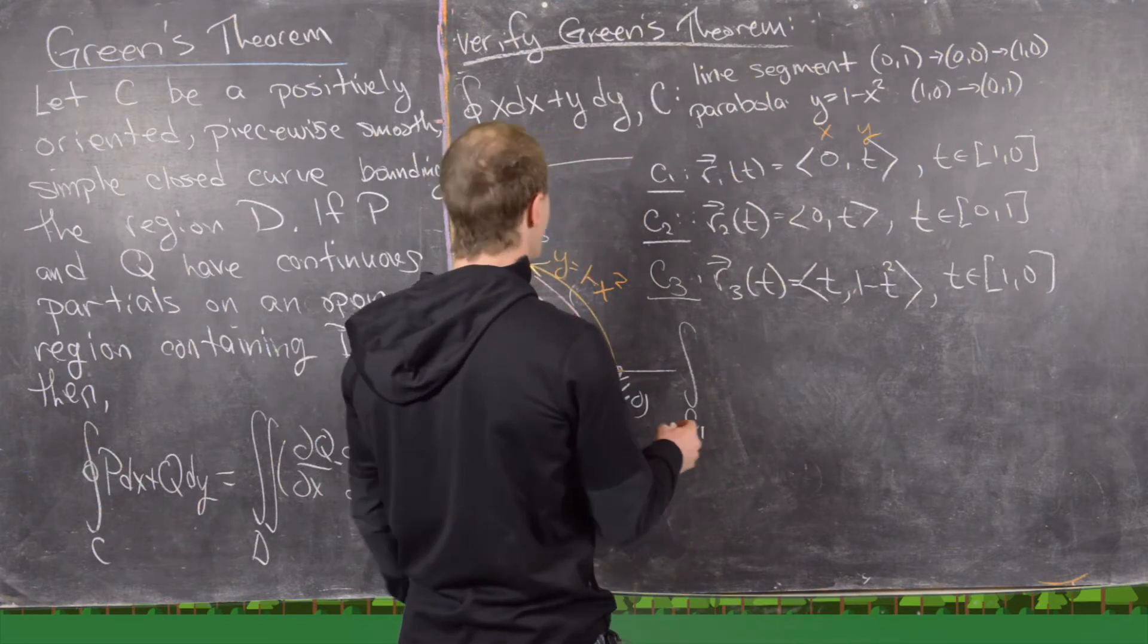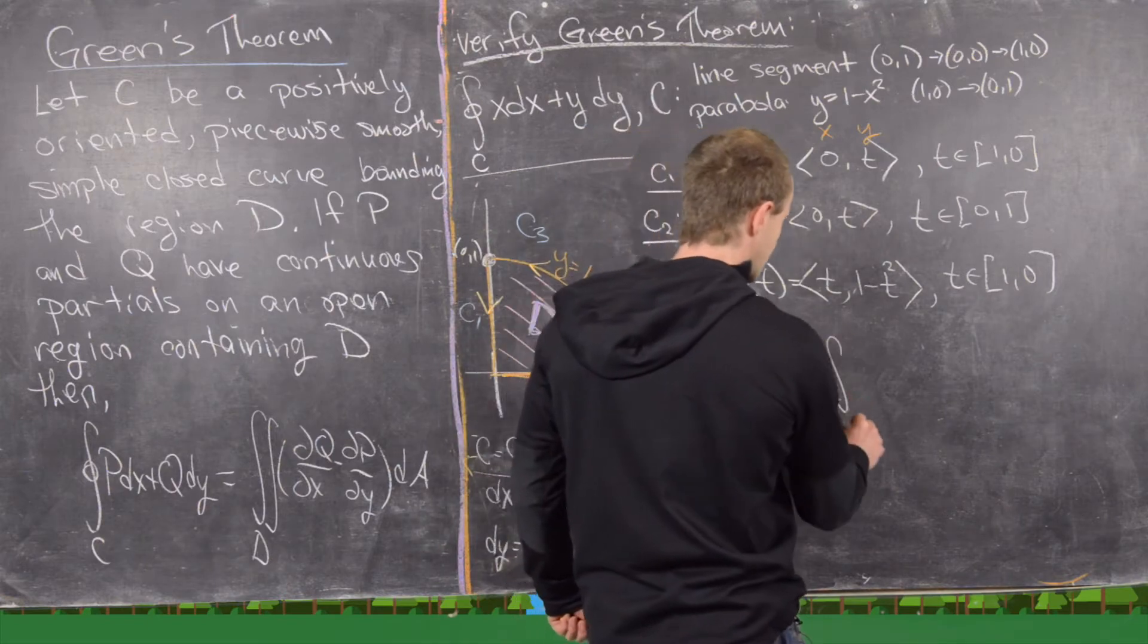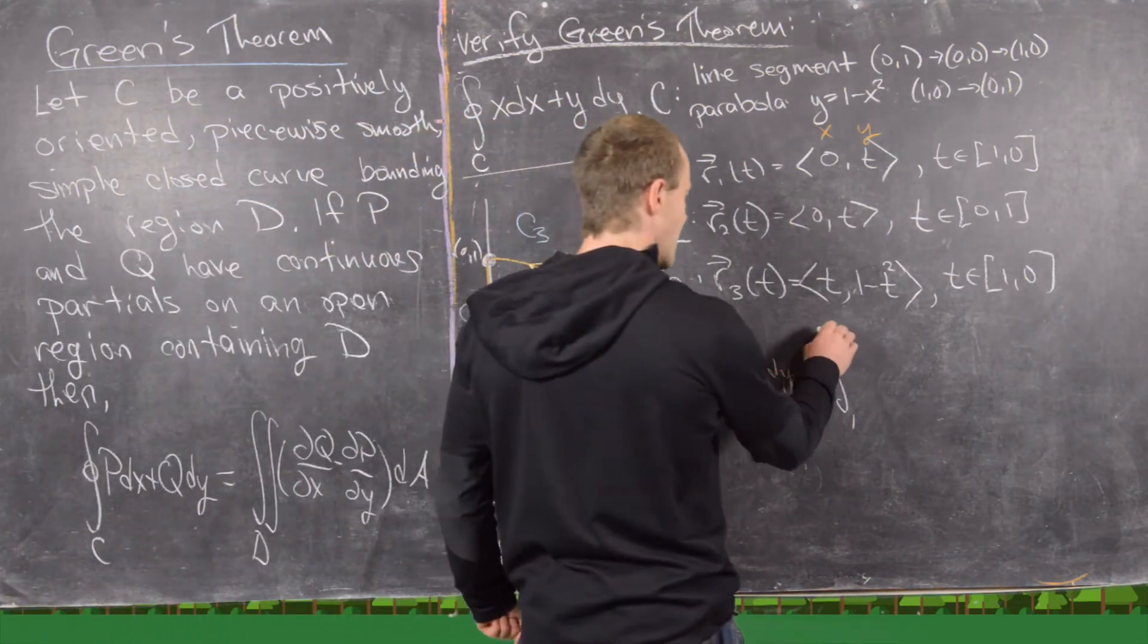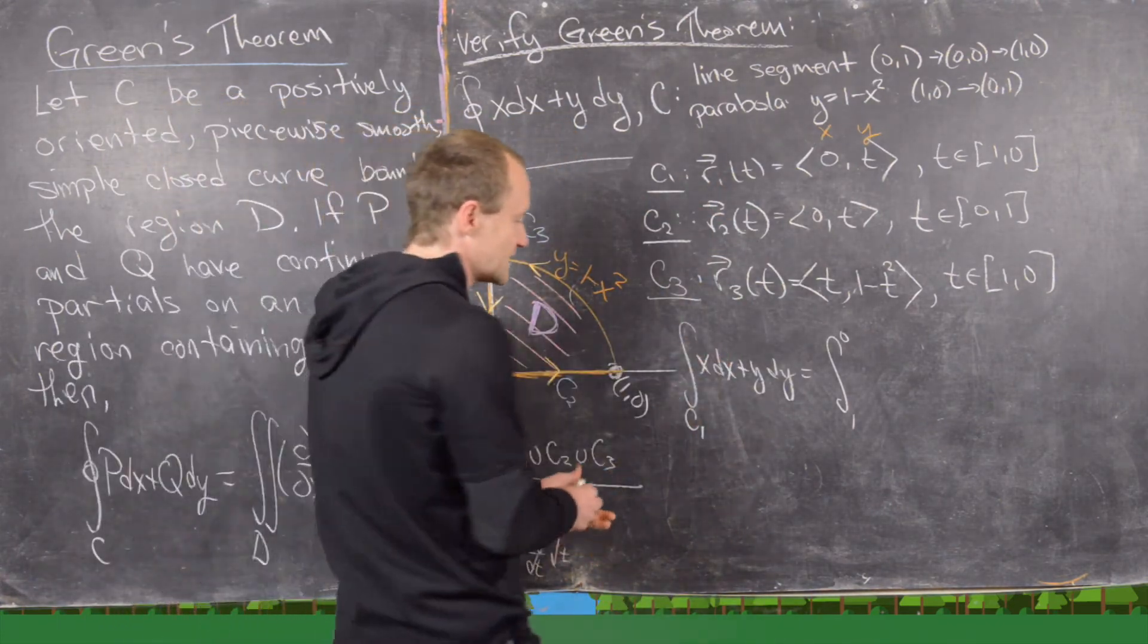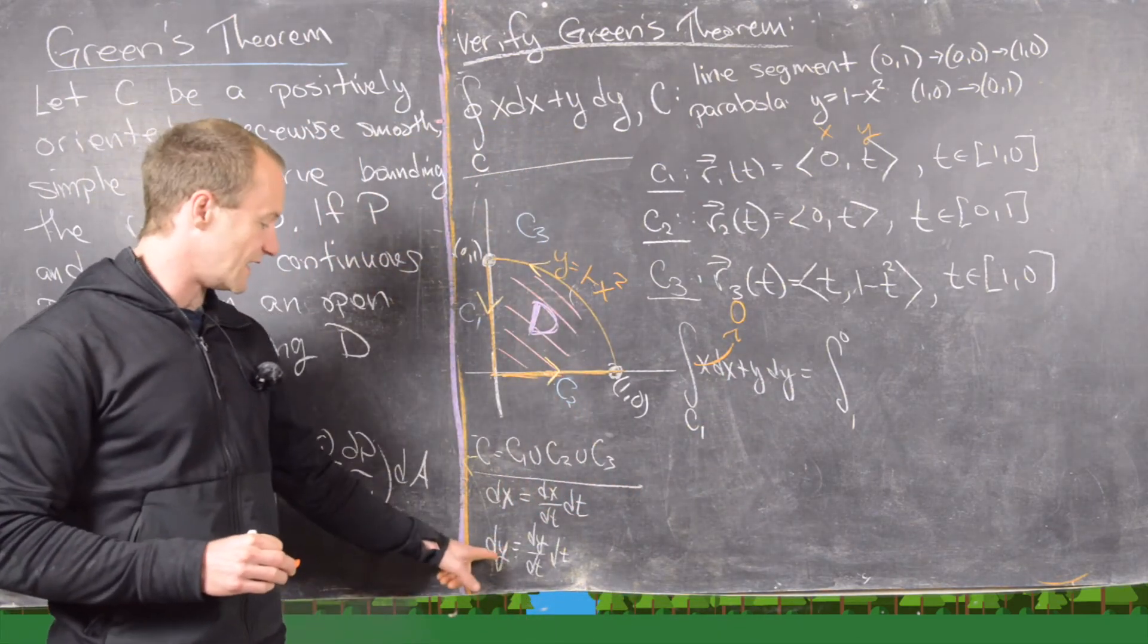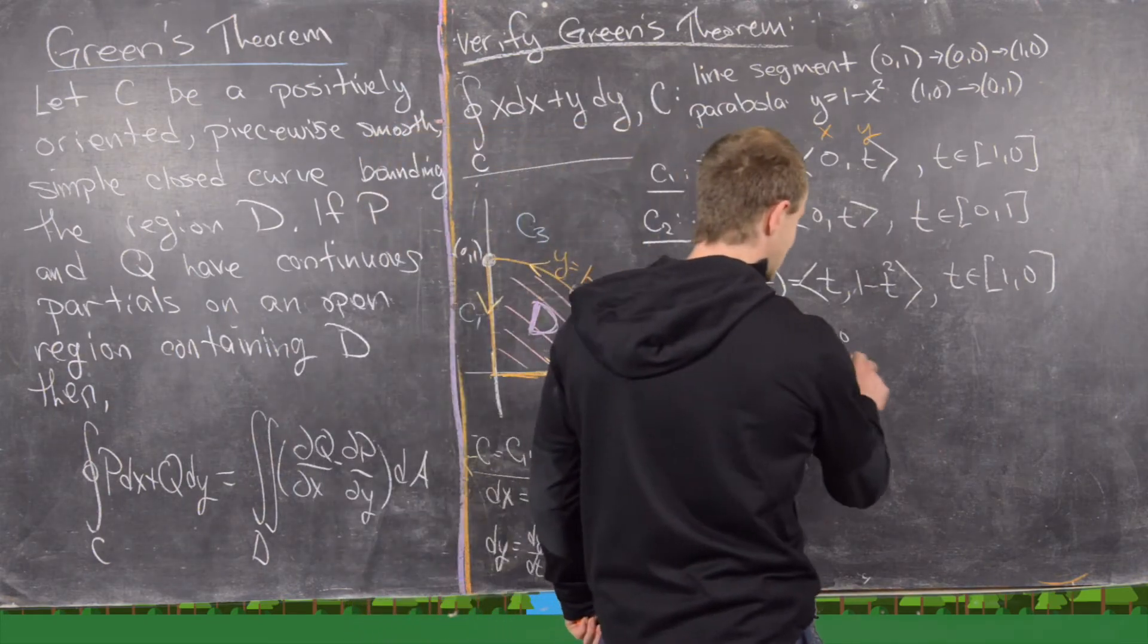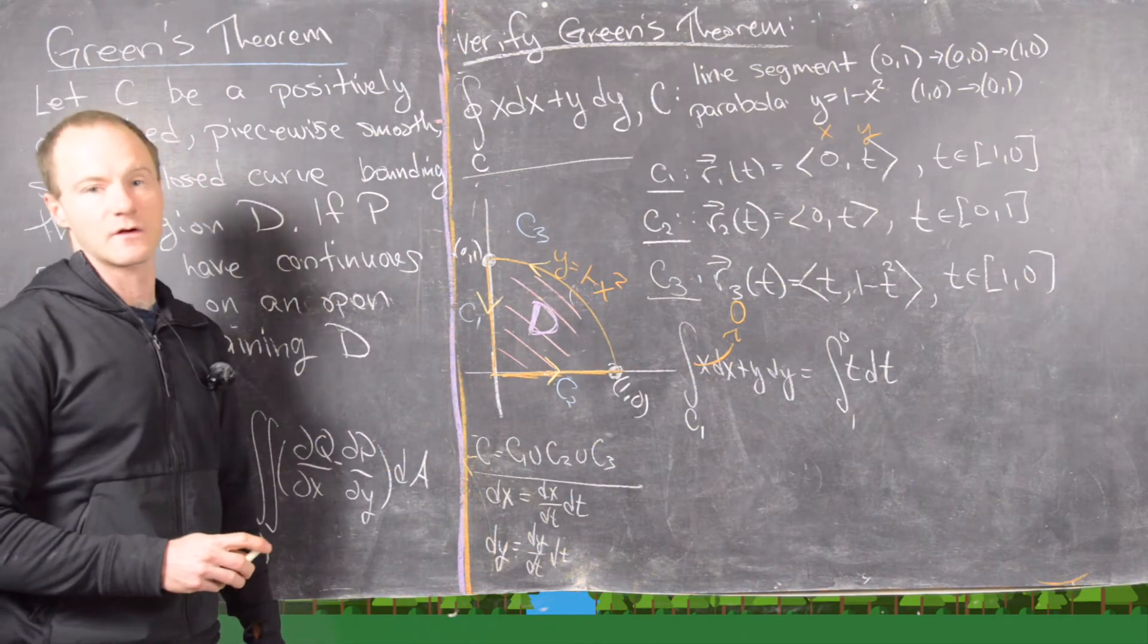So the integral over C1 of x dx plus y dy. So notice that's going to be the integral from 1 to 0 because that's the value that our parameters take on in the correct order of x dx, but notice that x is always 0. So this part goes to 0 here. And then y dy, so we're going to need to use dy/dt dt. So notice y is t, and then we have dy/dt dt. So that's just going to be t dt.